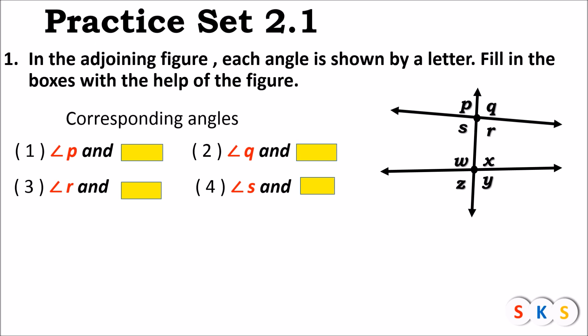We will try to understand corresponding angles in this figure. Corresponding angles always lie on the same side of a transversal. You can see the one vertical line which intersects both the lines — that vertical line is the transversal of both the horizontal lines. To the left-hand side of this transversal there are four angles: angle P, angle S, angle W, and angle Z. Similarly, we have four angles on the other side: angle Q, angle R, angle X, and angle Y.